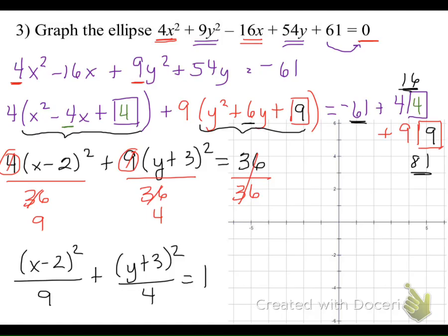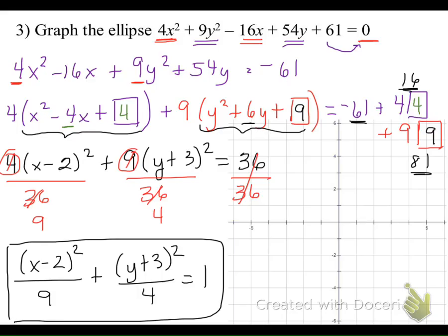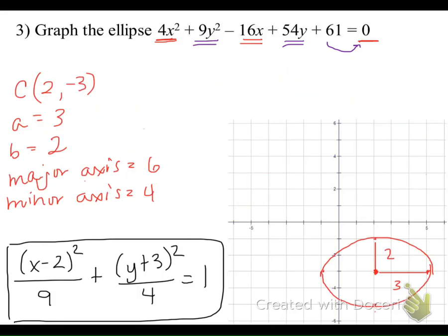Now that we have the equation in standard form, I'll let you figure out how to graph this ellipse and find the lengths of the major and minor axes. Hopefully you graphed a picture with a center at (2, -3), a horizontal distance of 3, and a vertical distance of 2. That makes the major axis 6 units long — it's the longer diameter from endpoint to endpoint — and the minor axis 4 units long. Great job!